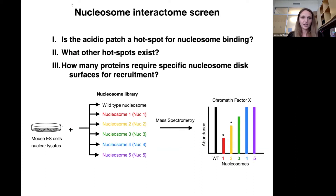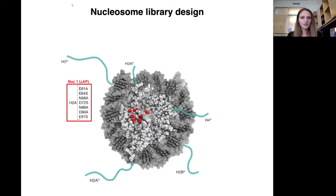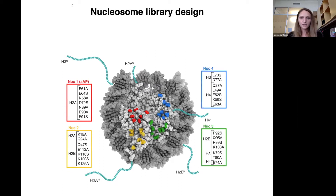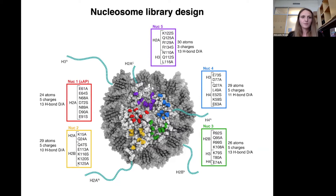To answer these questions, we designed a comprehensive nucleosome interactome screen, where we used nucleosomes with varying mutations on the nucleosome disk surface, incubated them with nuclear lysates, and used mass spectrometry to compare the proteomic profiles. Our nucleosome library consists of an acidic patch neutralization mutant, where seven residues that are part of the acidic patch are mutated to a combination of alanine and serine residues, and four other nucleosomes with adjacent patches mutated the same way to collectively disrupt the entire nucleosome disk surface. These mutations are similar in degree, meaning that they affect similar numbers of atoms, charge groups, and hydrogen bond donors and acceptors.